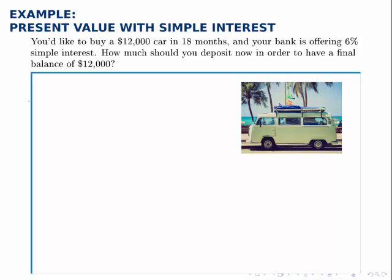How much should you deposit now in order to have a final balance of $12,000 at the end of the 18 months? So we use the same future value formula for simple interest, that the future value F is equal to the present value P times the quantity 1 plus RT, where R is the interest rate and T is time.